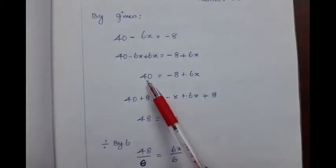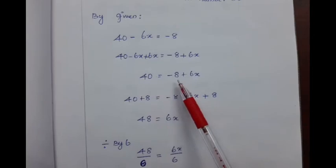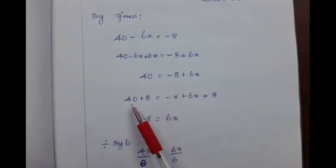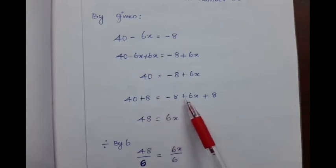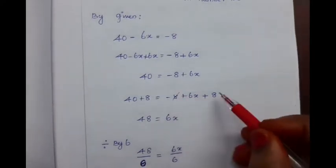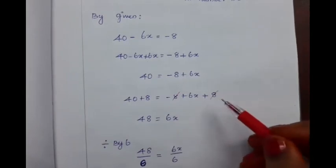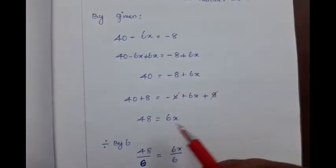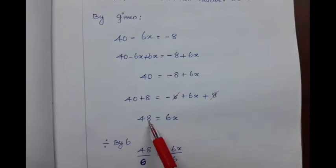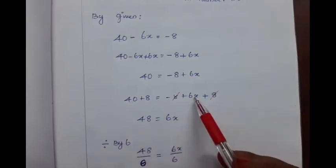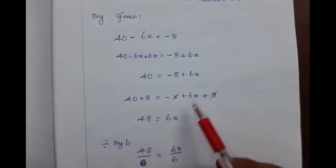To simplify this expression further, we need to add plus 8 on both the sides. So we get 40 plus 8 which is equal to minus 8 plus 6x plus 8. Minus 8 and plus 8 is getting cancelled. We get 40 plus 8 equals 48, and on the right hand side, 6x.